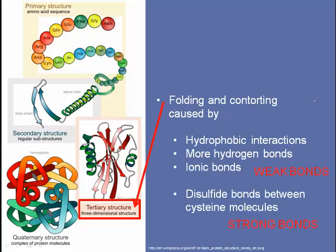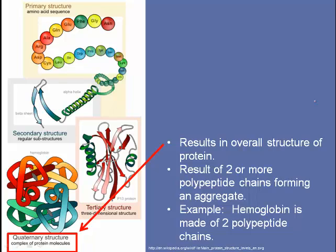The third level of protein structure is tertiary structure. This is further folding and contorting caused by hydrophobic interactions — some of these amino acids, or parts of them, are hydrophobic. There's also more hydrogen bonding between functional groups and ionic bonding; these are all relatively weak bonds. You can also get stronger bonds made between cysteine molecules. Cysteine is an amino acid that contains sulfur, and when two cysteine molecules are near one another, you get disulfide bonding, which is a stronger form of bonding. The fourth level of protein structure is quaternary structure, which results in the overall structure of the protein. Two or more polypeptide chains form an aggregate. An example of this is hemoglobin, which is actually made up of two polypeptide chains.